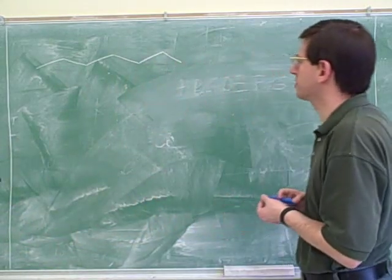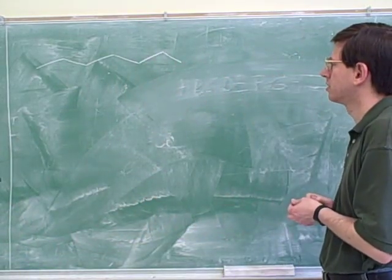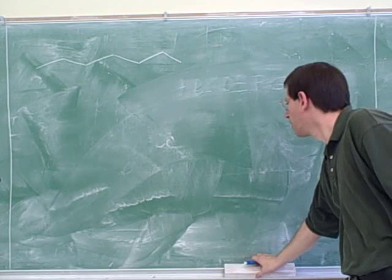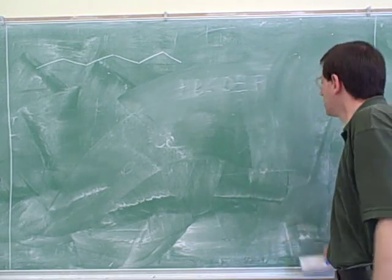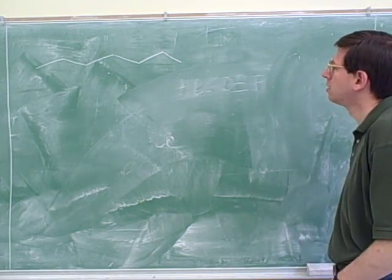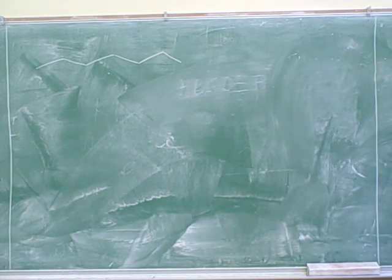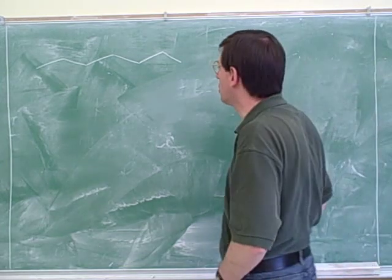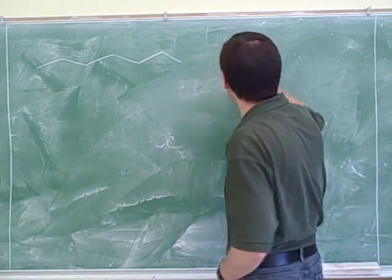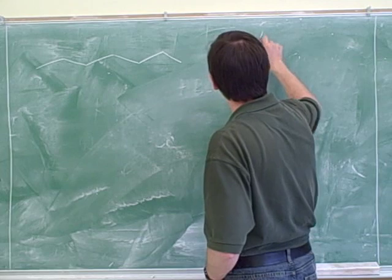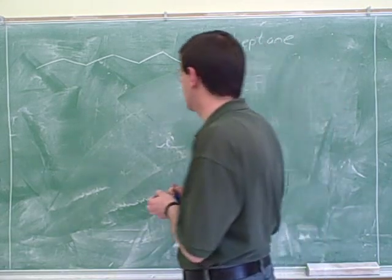All right. Well, first of all, what's the name of this compound? One, two, three, four, five, six, seven. The one after hexane. I need to memorize this one. So seven, I believe, would be hept. So this would be heptane.